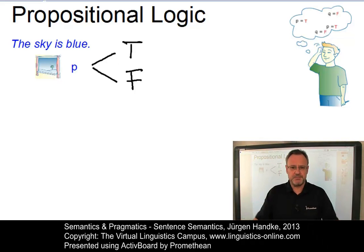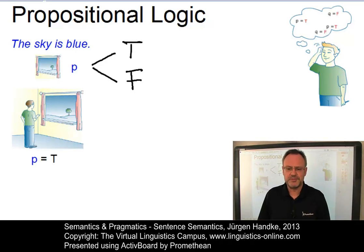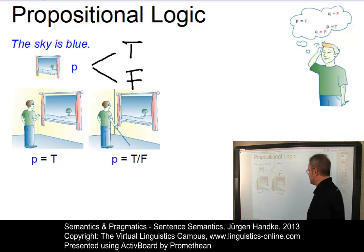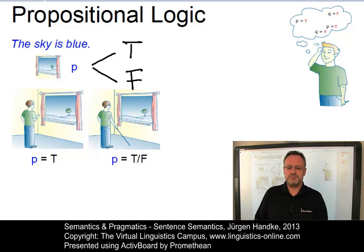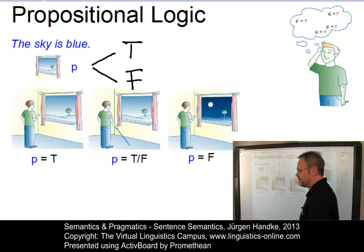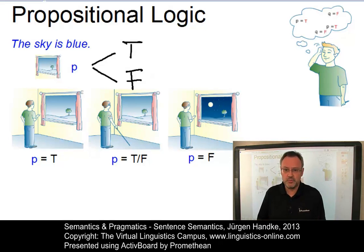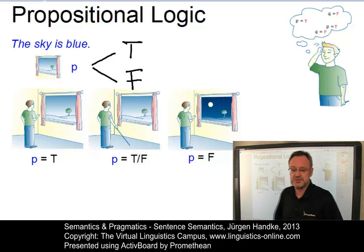This truth value by and large depends on our world knowledge, but also on a number of additional parameters. They include, for example, the general content. This proposition P is true if the content is in line with our basic understanding of the world. Another influential factor can be the speaker. This proposition P may be true, but what if a blind speaker utters this sentence? Can we say anything at all about its truth value? Well, depending on whether the blind speaker is right or not. And then there may be the local or temporal context within which the sentence is uttered. The proposition 'the sky is blue' is only true if the sentence is uttered during daytime. So here it is false.